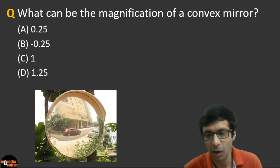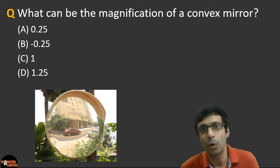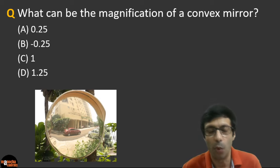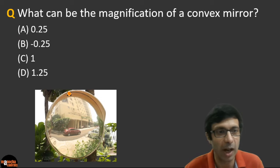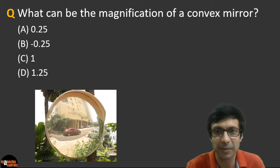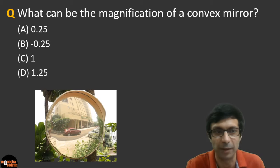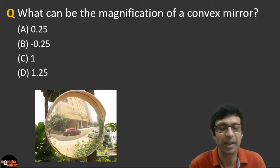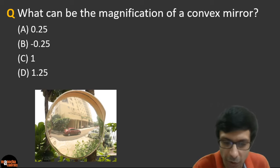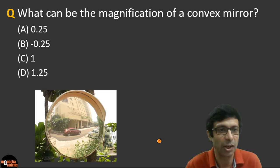Next question: What can be the magnification of a convex mirror — 0.25, minus 0.25, 1, or 1.25? Can you see this convex mirror in the picture? Notice that the car appears as a diminished image. A convex mirror always gives a diminished image, so the magnification is basically going to be less than 1 — either 0.25 or minus 0.25.